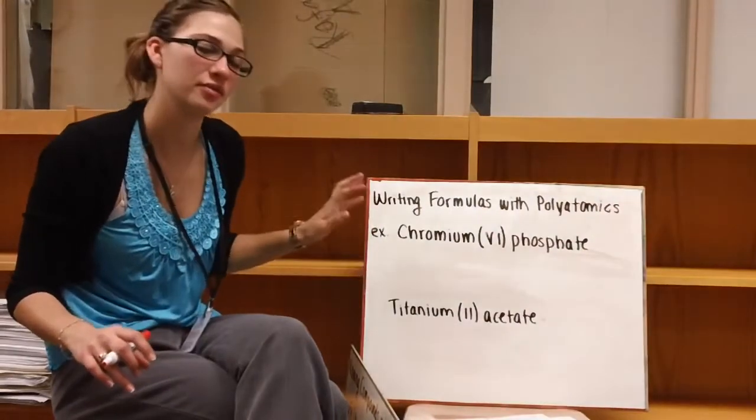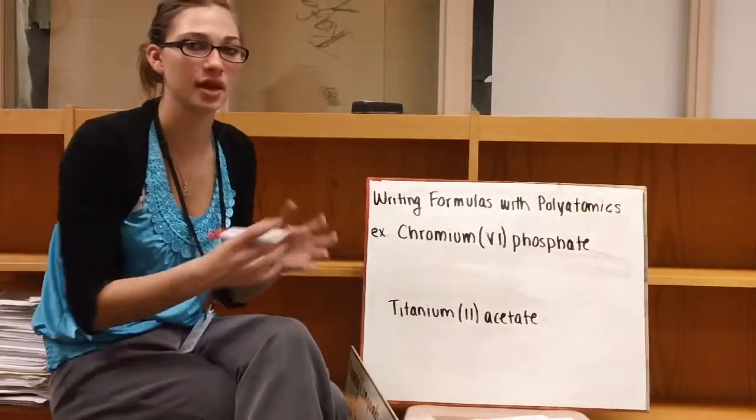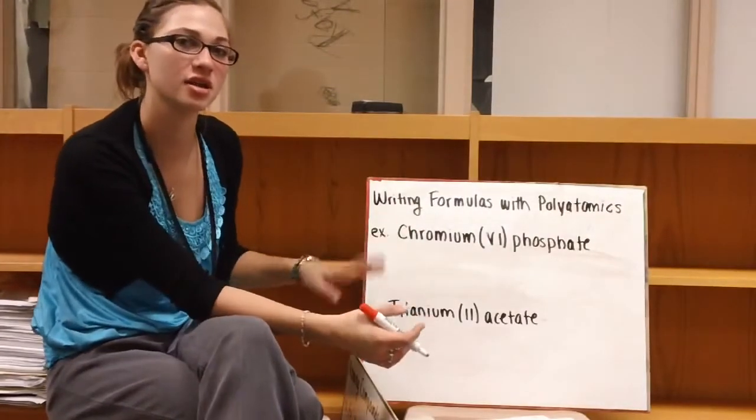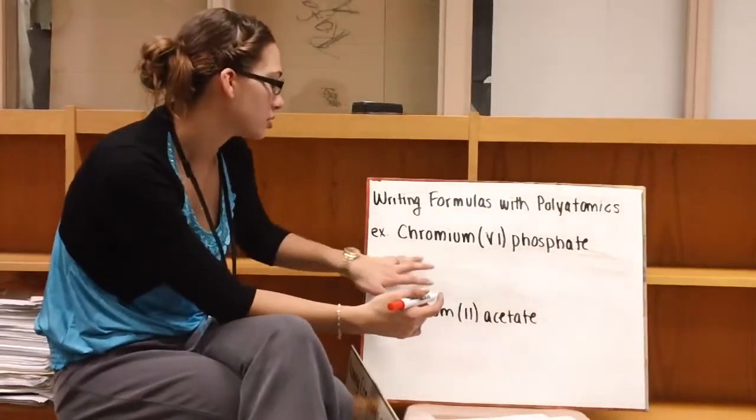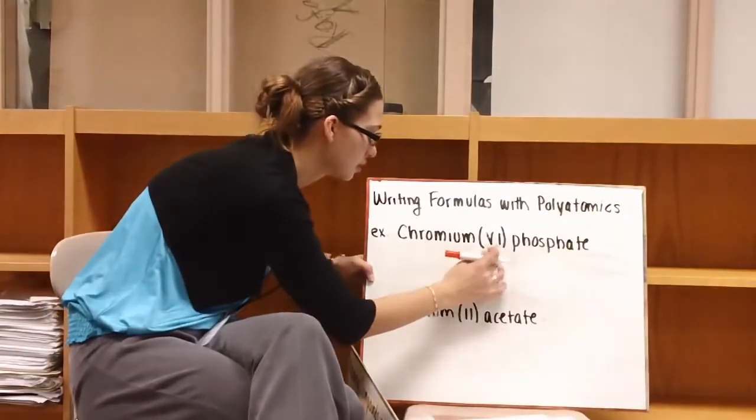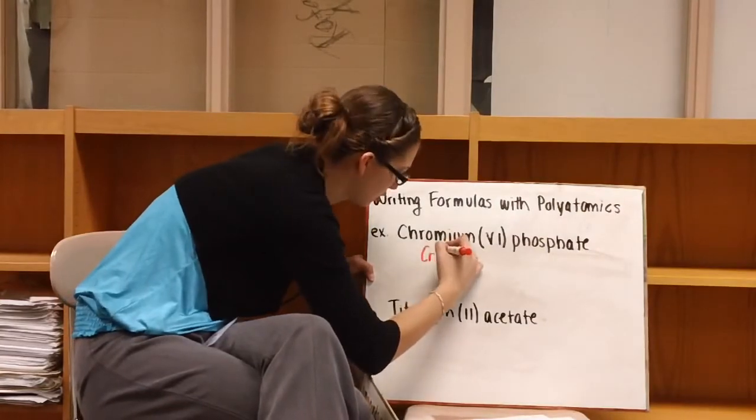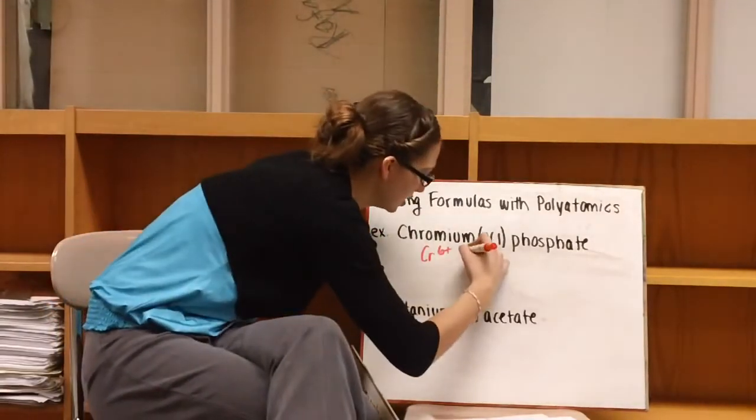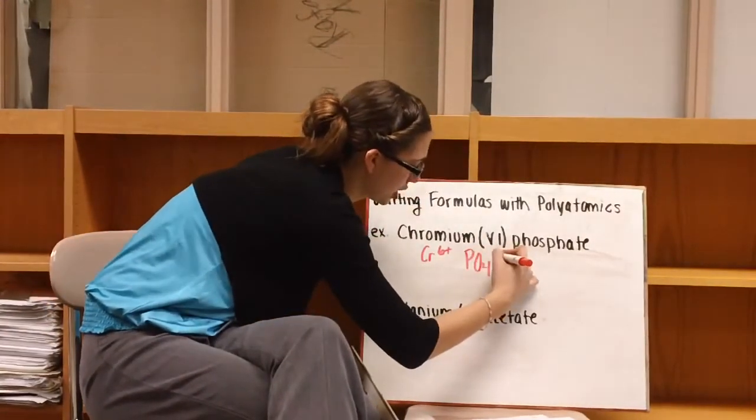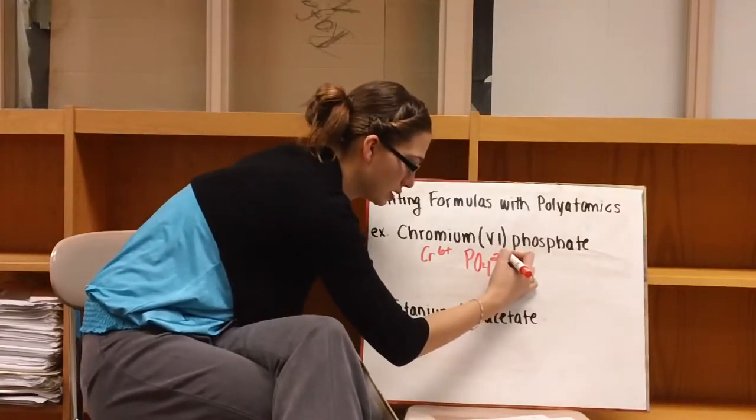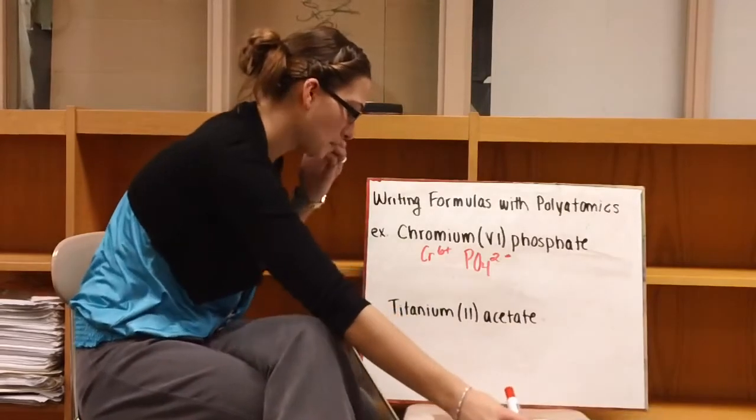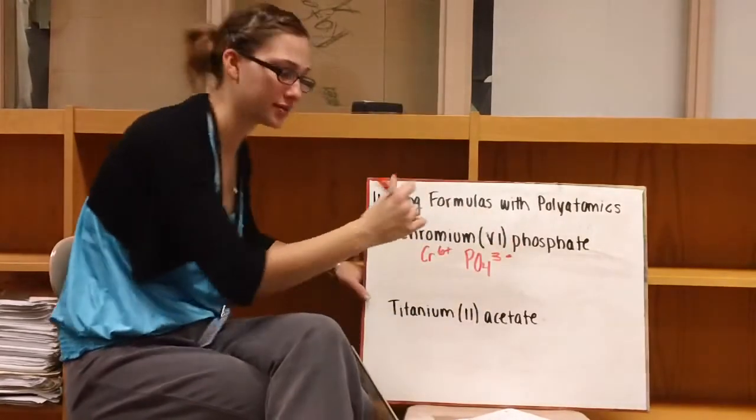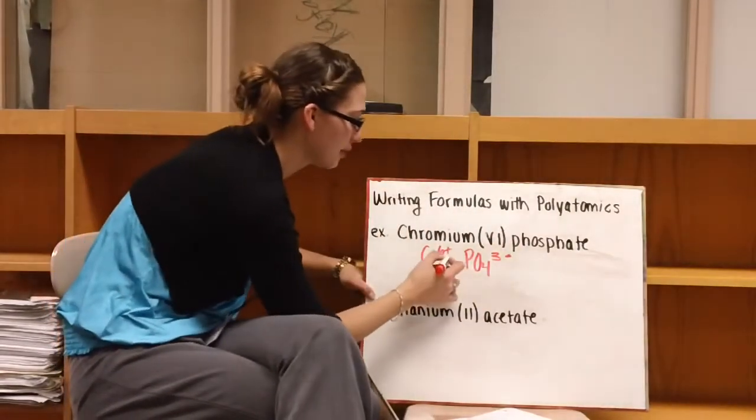Alright, so now we're going to have to be able to go from the names to the formula. First, like always, I would write the cation and anion first with the charges, and then put it together. So chromium(VI) phosphate. Chromium, and our Roman numeral tells us that it's six, and phosphate is PO4 3-. Sorry, three minus. I forget sometimes also.